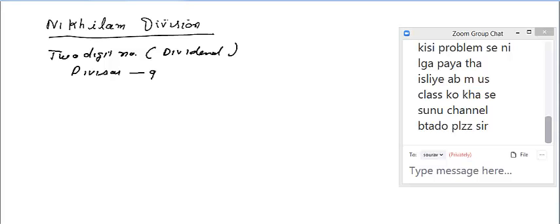The dividend is any two-digit number, and the divisor is only 9. When you have any two-digit number and you want to divide by 9, you will learn the process from a small example. I will start with a very simple example and then extend to larger cases.